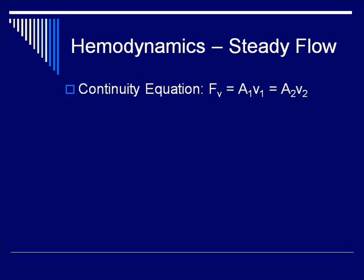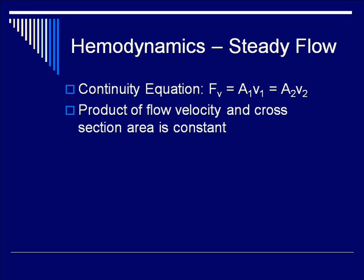Let's talk about the continuity equation: F(V) equals A1 times V1 equals A2 times V2. This tells you that the product of flow velocity across a particular cross-sectional area is constant. If you compare one region to another, there is no gain or loss of fluid.